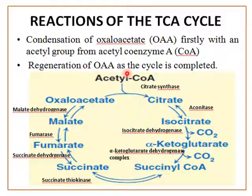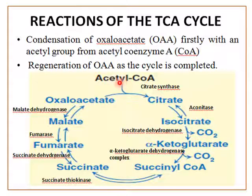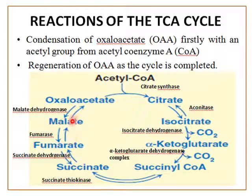This slide shows the complete overview of all reactions of Krebs cycle. We'll be studying each reaction in detail. Acetyl-CoA is the precursor of Krebs cycle — it is a two-carbon compound generated from pyruvate with the help of pyruvate dehydrogenase complex. This acetyl-CoA undergoes all these reactions and is finally converted into oxaloacetate.